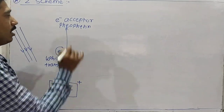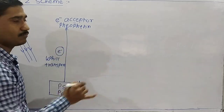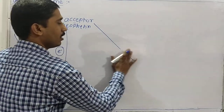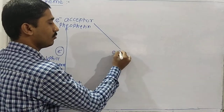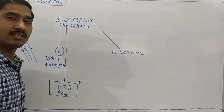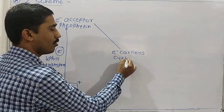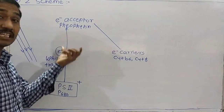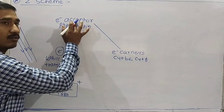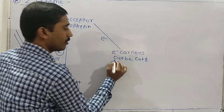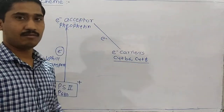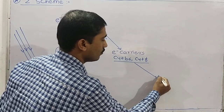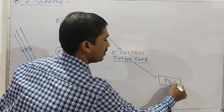From pheophytin, the electron is forwarded towards the electron transport system — the electron carriers. These are different cytochromes: cytochrome b6 and cytochrome f, forming the cytochrome b6f complex. From this complex, the electron is then transported towards the next photosystem, Photosystem I.